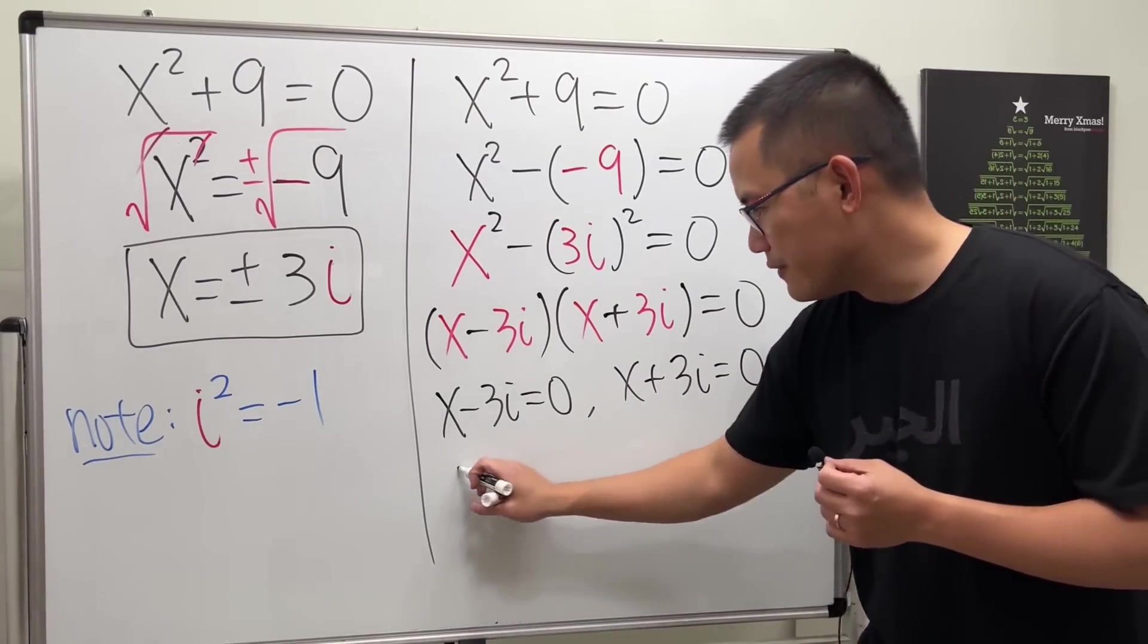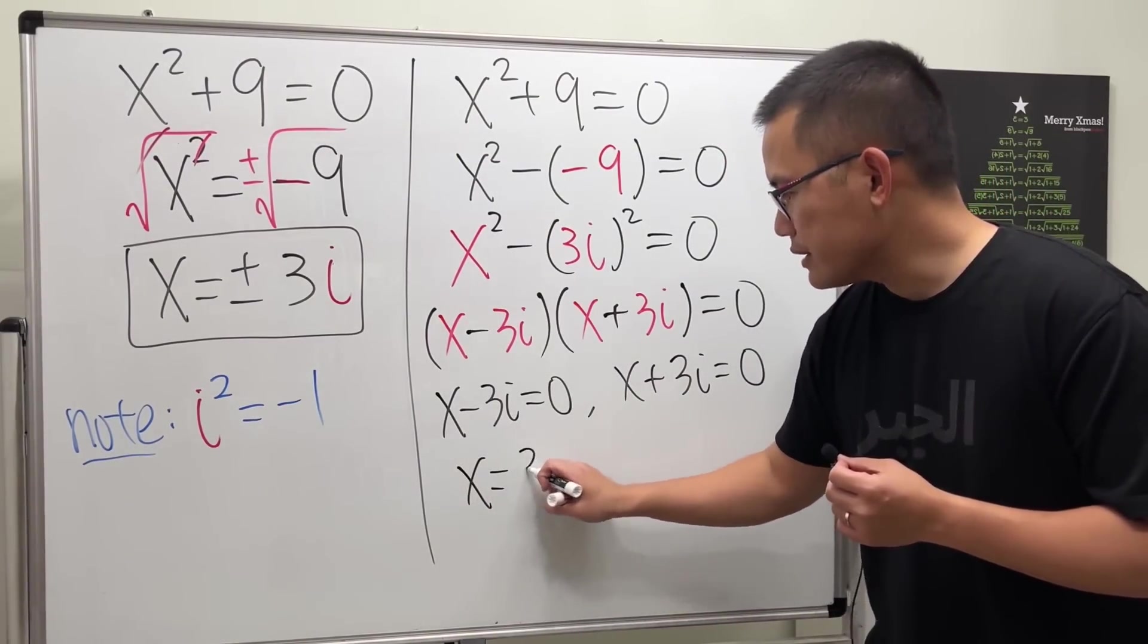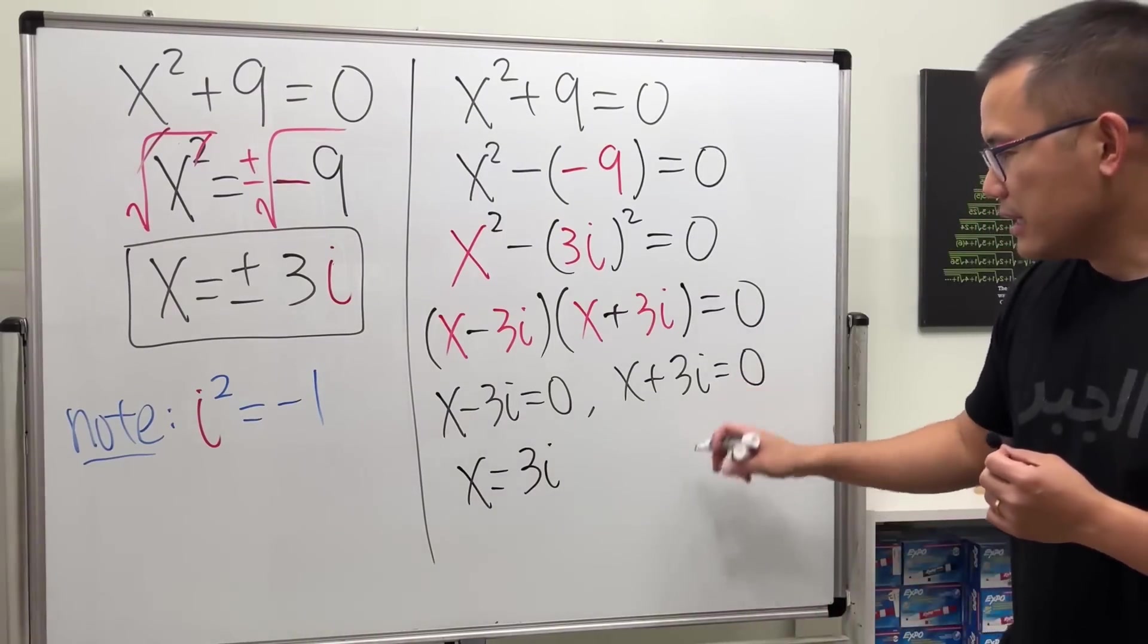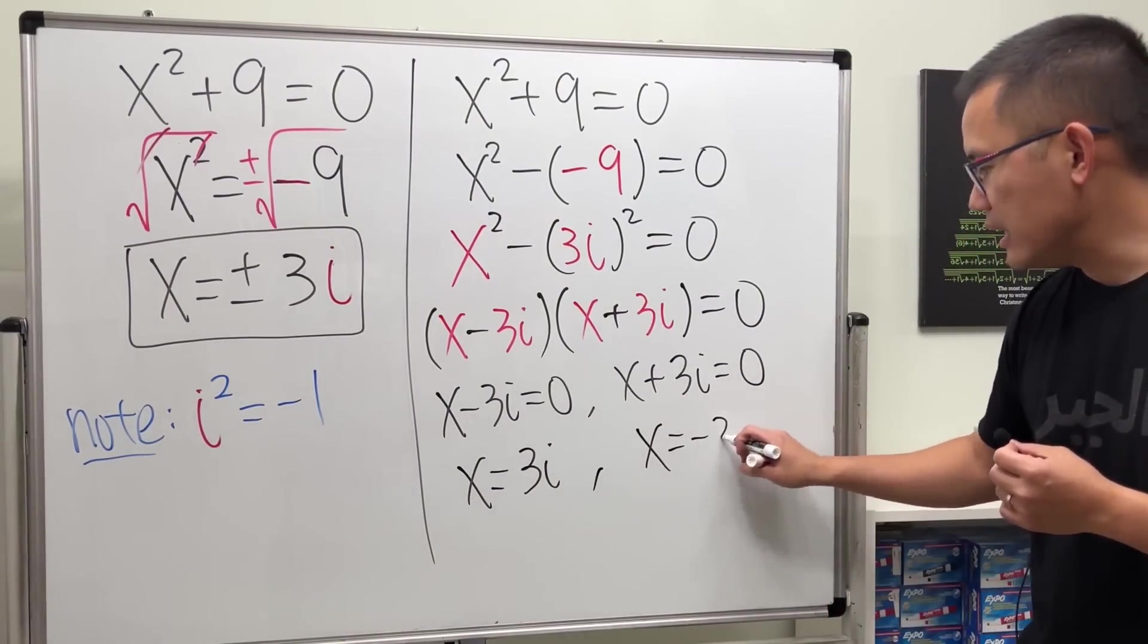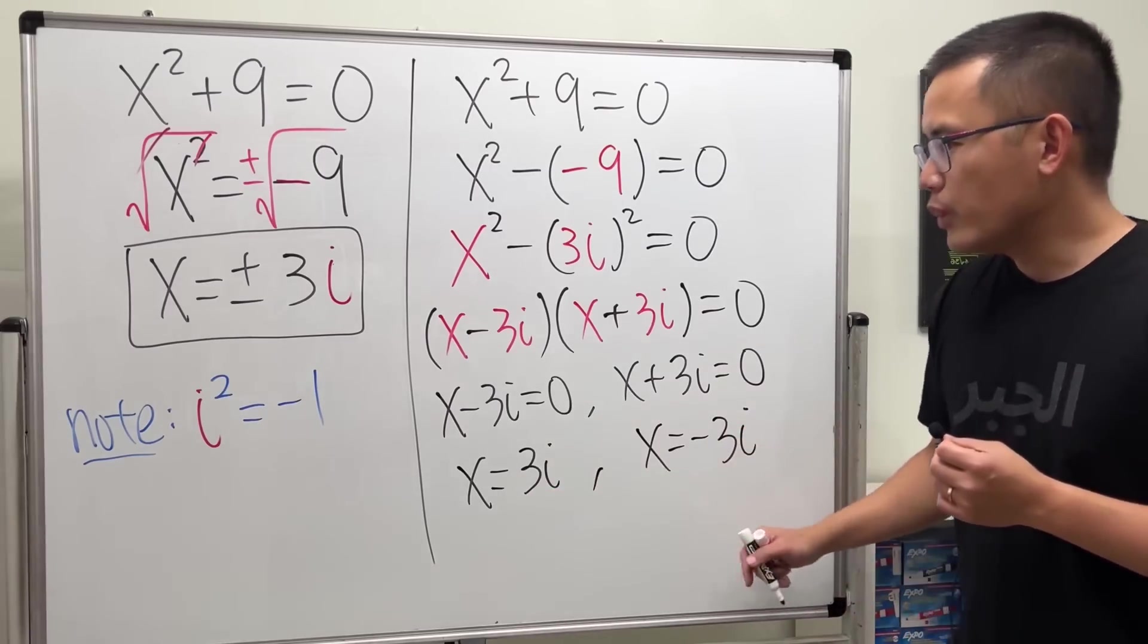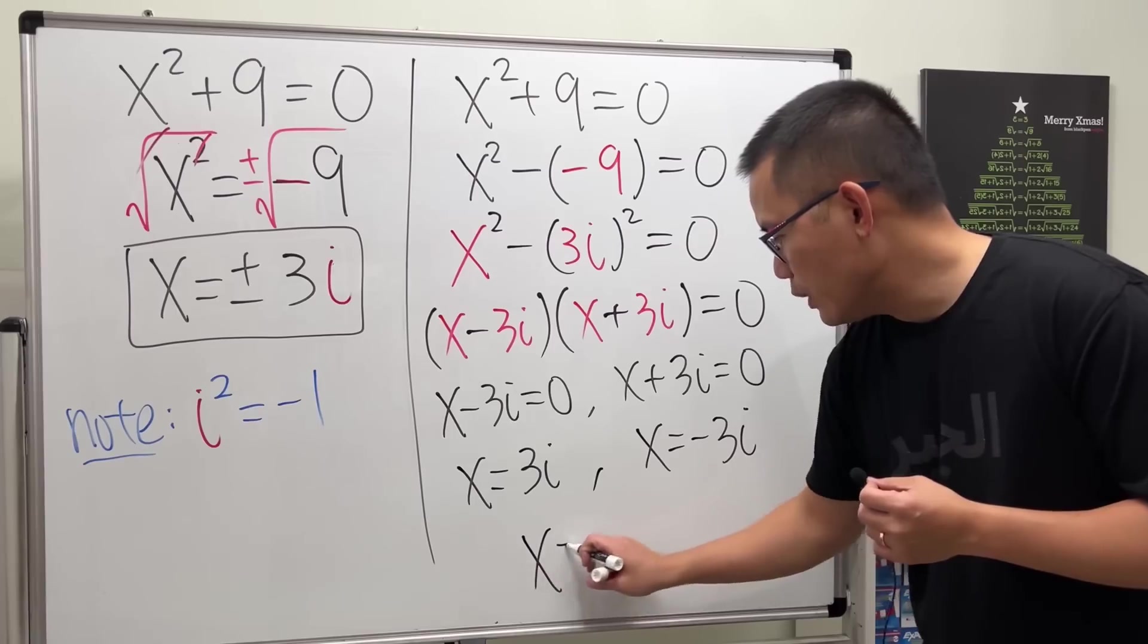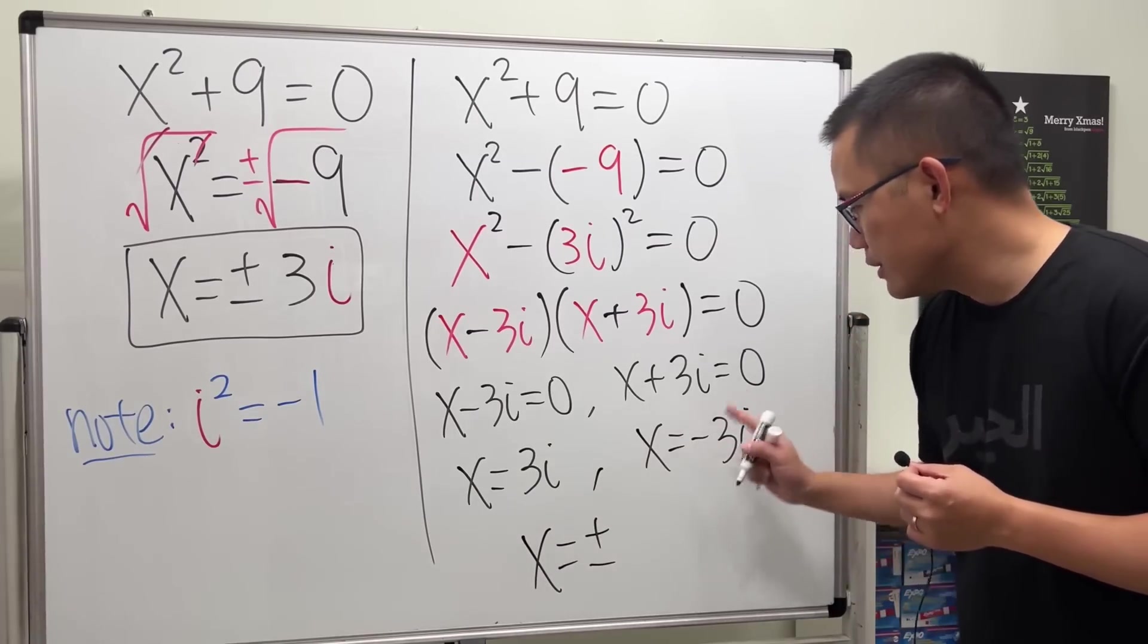Move this to the other side. First answer, x equals 3i. Second answer, move this to the other side. x equals negative 3i. Together, we can put it as x equals plus or minus 3i.